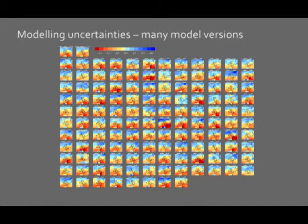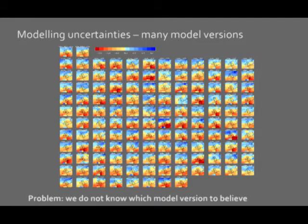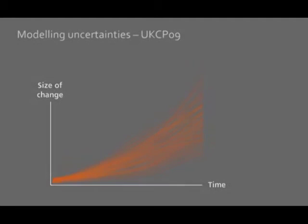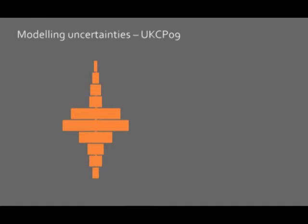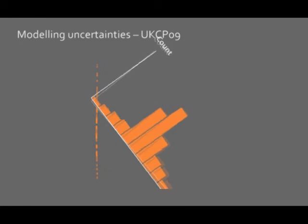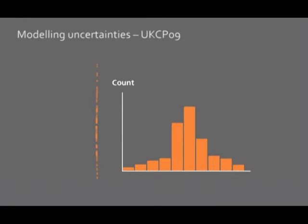If we were to look at all of those outputs it might look something like this. The problem is we don't know which model version to believe. So what we can do is look at all the results in the 30-year time slice and map them onto a graph. We can then use that graph to group the number of models that project a certain size of change.